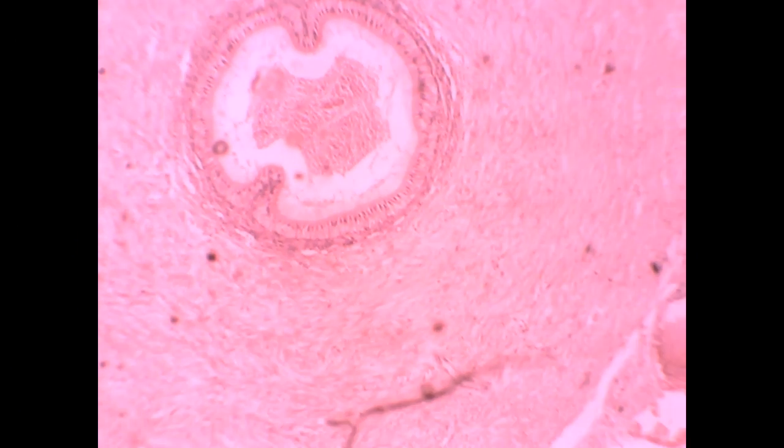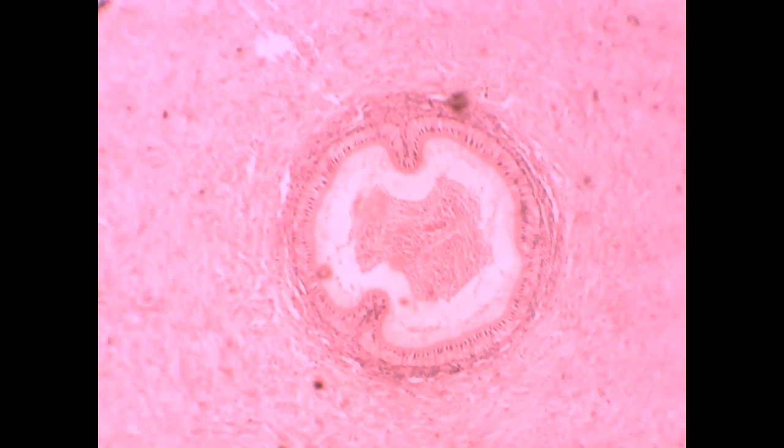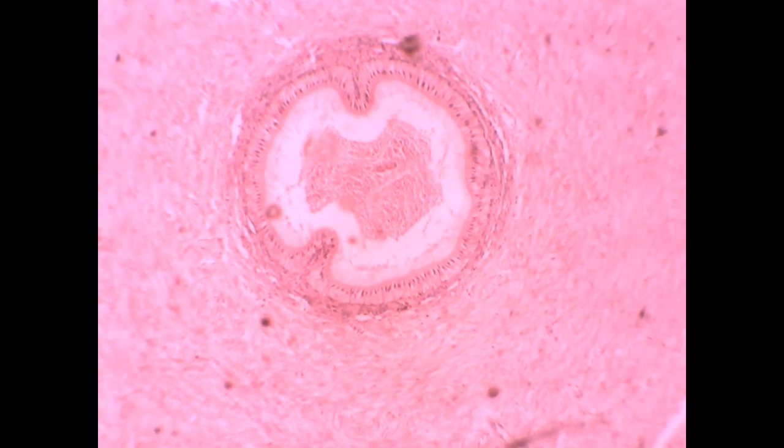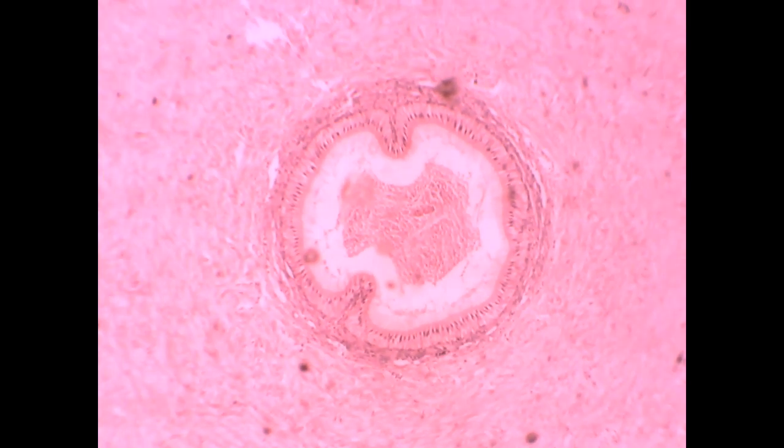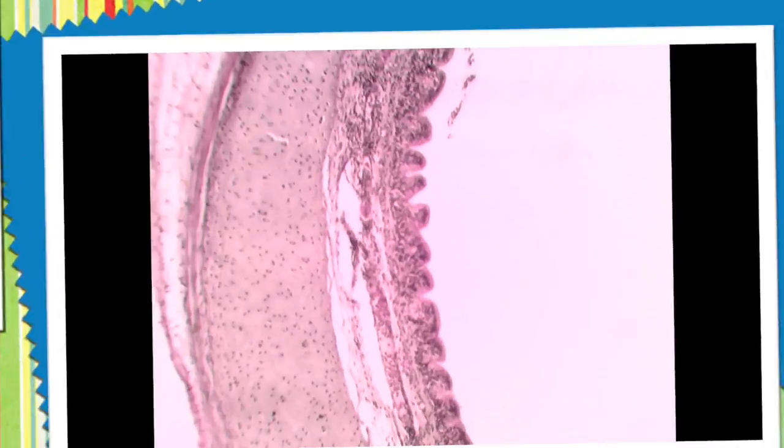Small hollow organ with this epithelium formed of one or two layers of nuclei, and no submucosa, or very narrow submucosa, as the muscle is very thick. This is vas deferens.